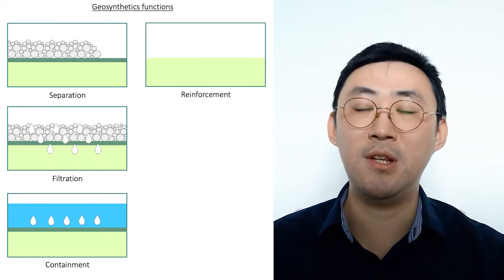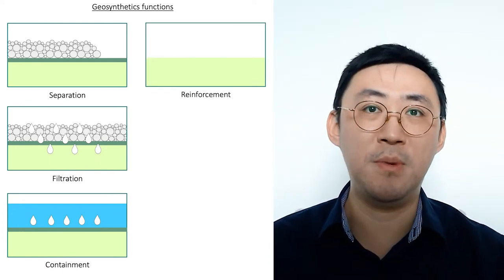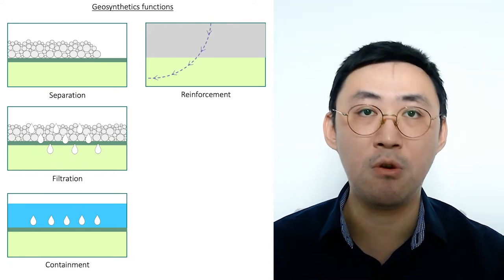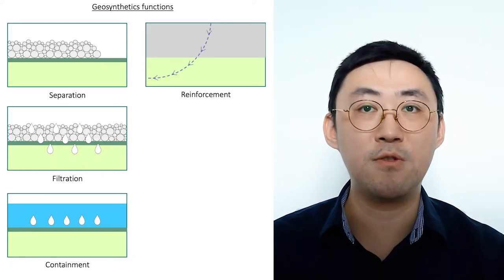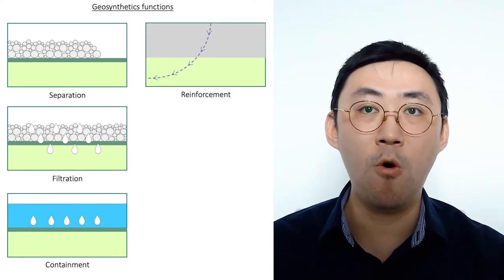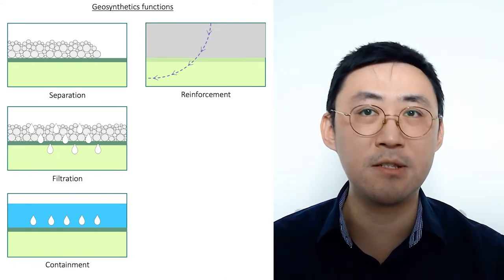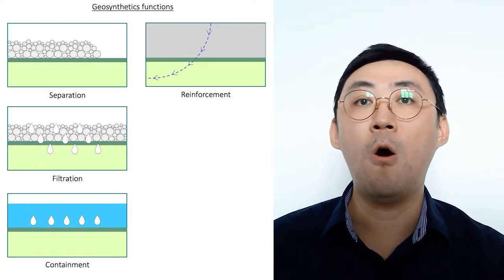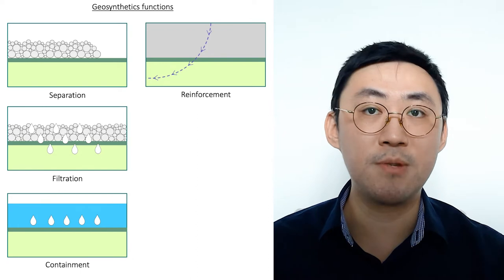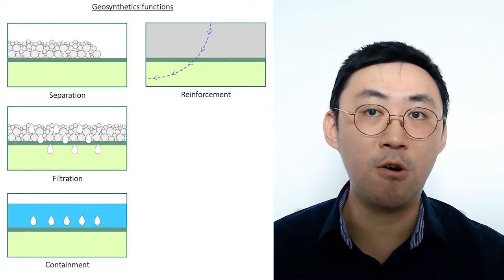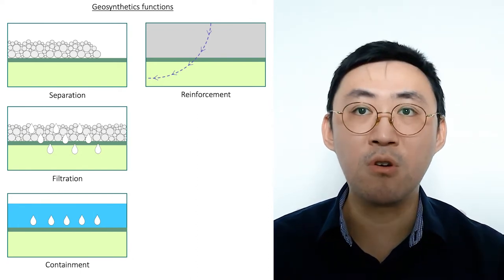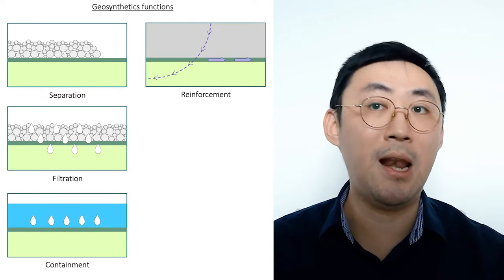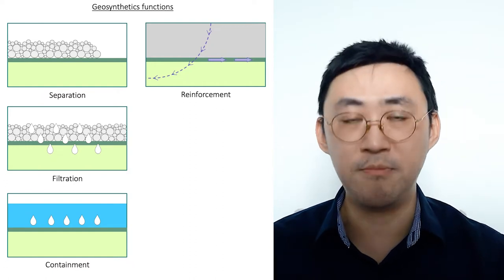The fourth function is reinforcement. Reinforcement can be split into reinforcement of slope and wall to improve shear resistance of soil against any failures, or reinforcement for base courses to provide good confinement against any lateral movements.